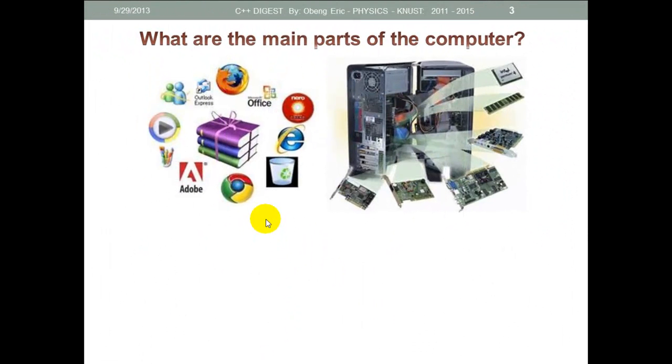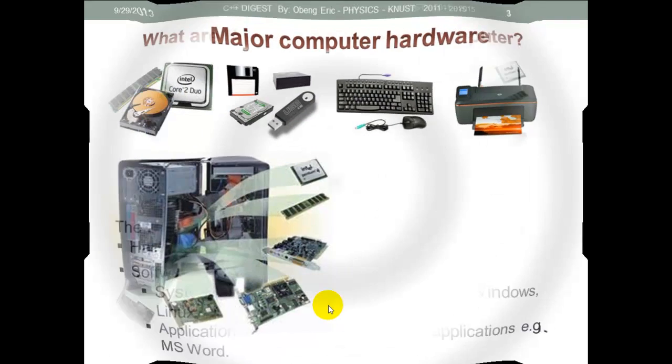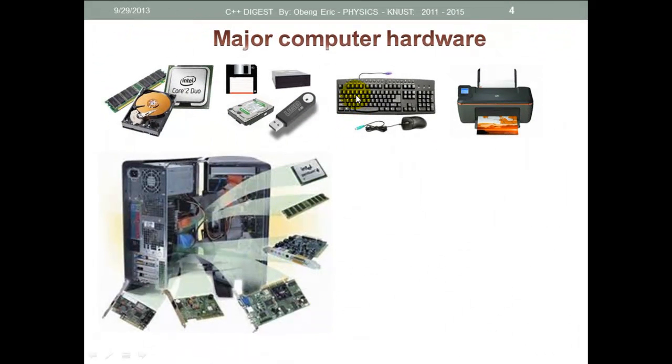Now what are the main parts of a computer? I believe everyone listening to this tutorial knows the main parts of a computer. So when we talk about the parts of a computer, two things come to mind: we have the hardware, then we have the software. The software is divided into two parts. We have system software, which includes operating systems like Windows, Linux, Unix, Ubuntu, and others. Then we also have application software. These are programs that are written to perform specific tasks.